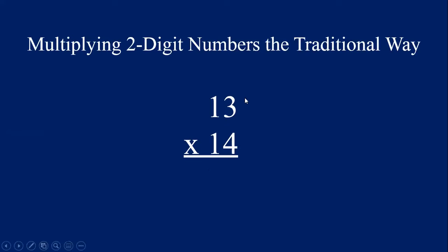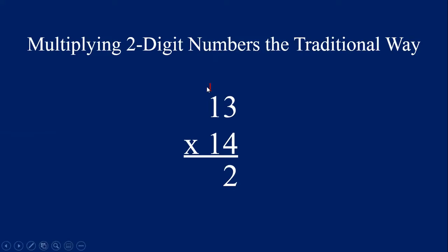We have the equation 13 times 14. The first step if we were to solve this the traditional way would be to start in the ones place — that would be the 4 — and we're going to multiply this 4 by the number 13. So first we're going to multiply 4 times 3, which is 12. We put the 2 in the answer for the ones place and carry that 1 up into our tens column. Now we'll multiply 4 times 1, which is 4, and add that carried 1 — so 4 plus 1 is 5. There's our first partial product.